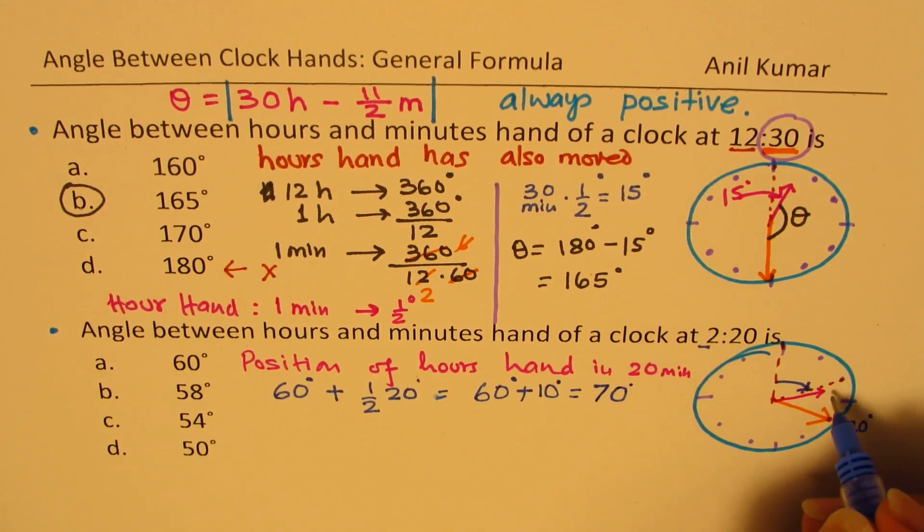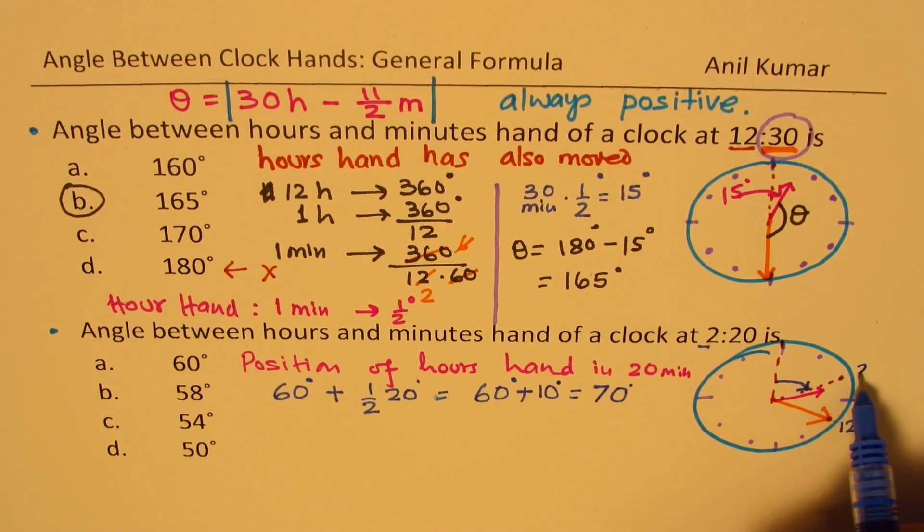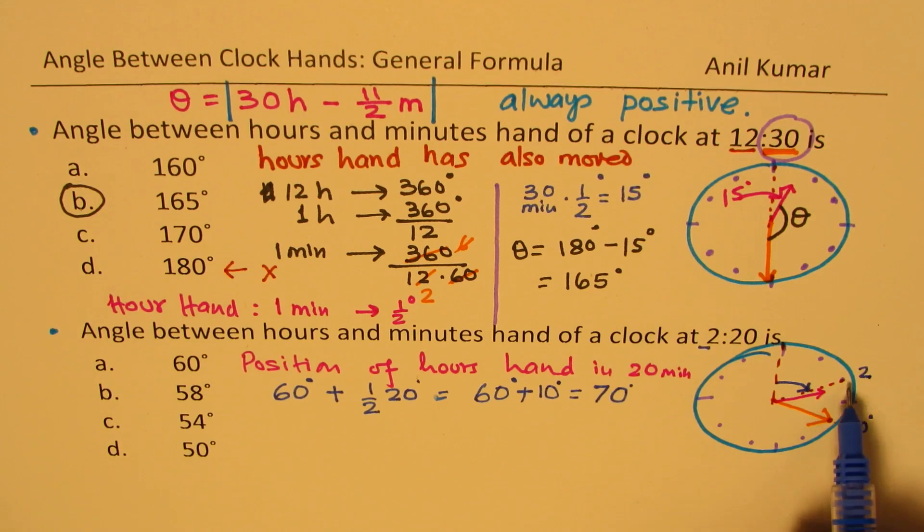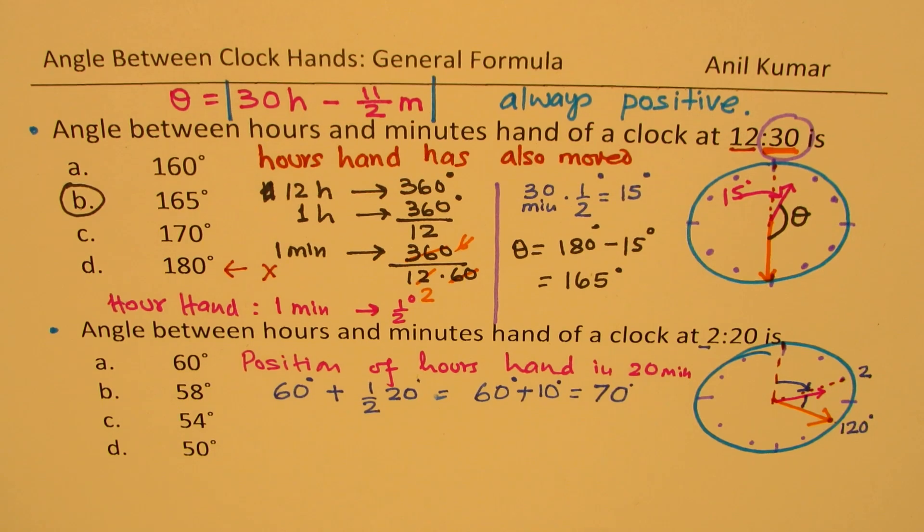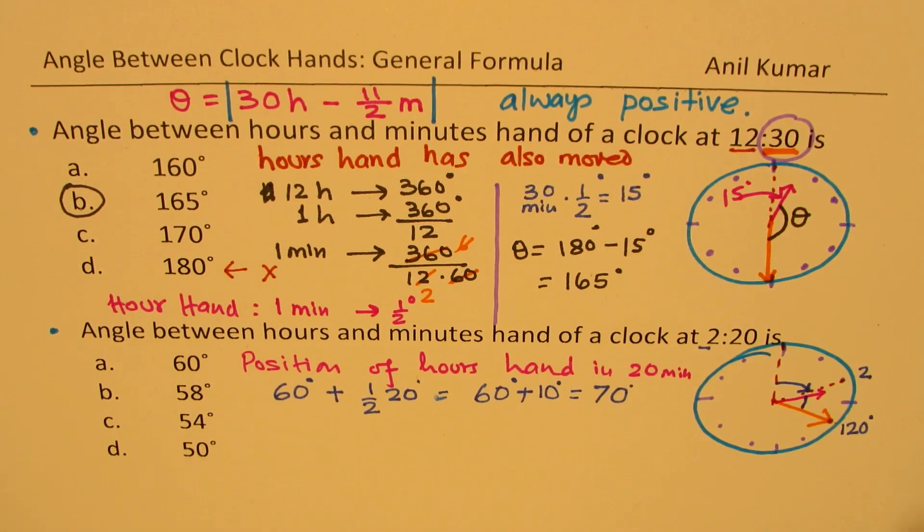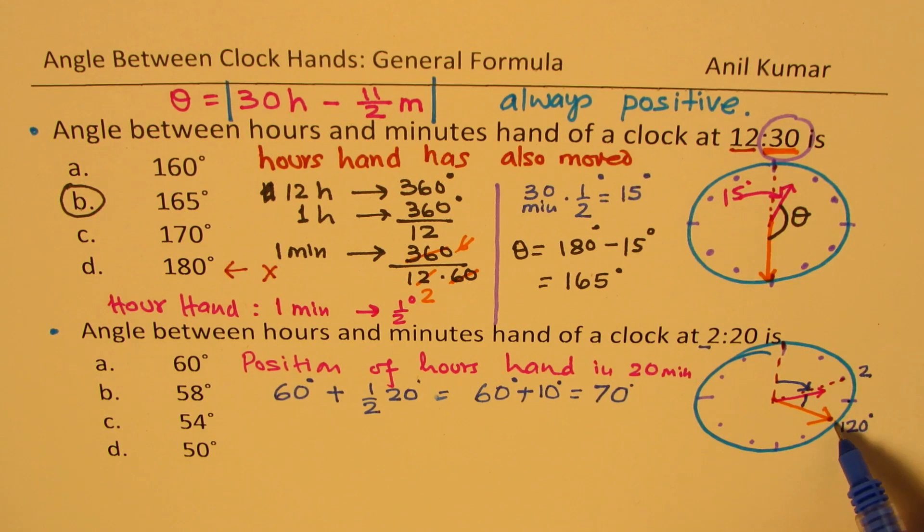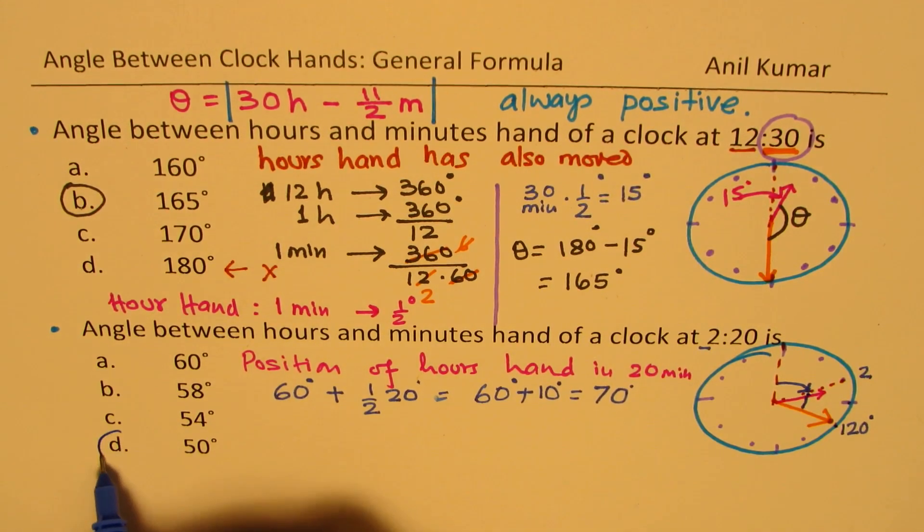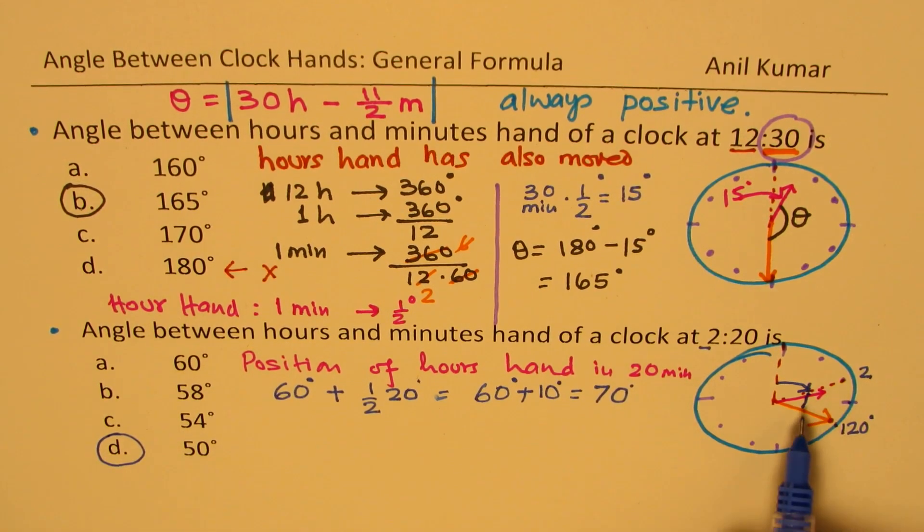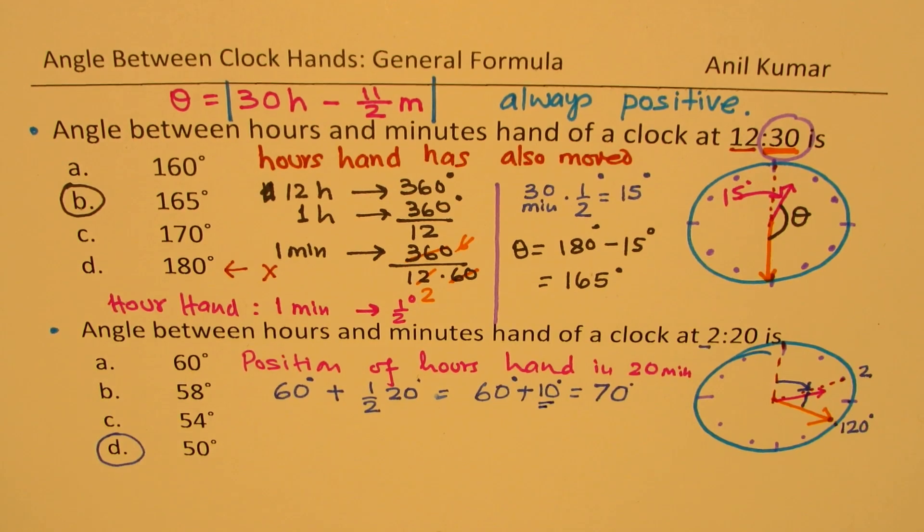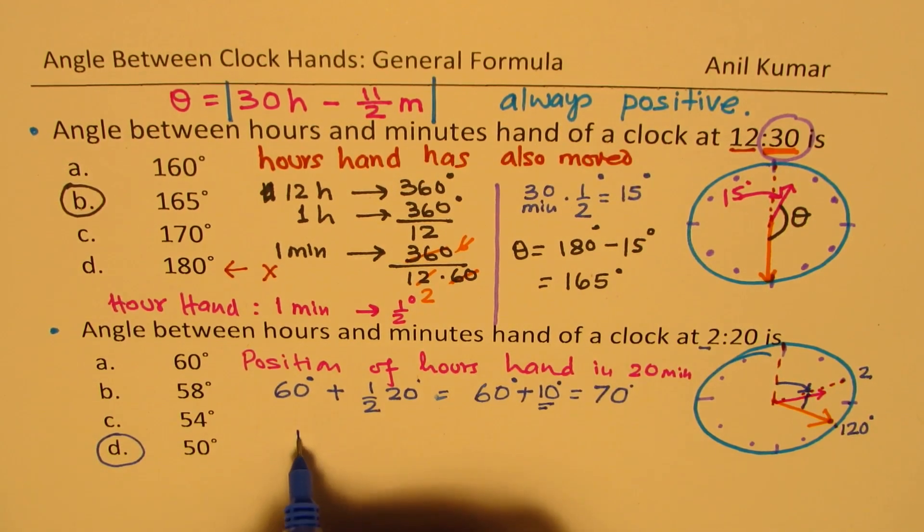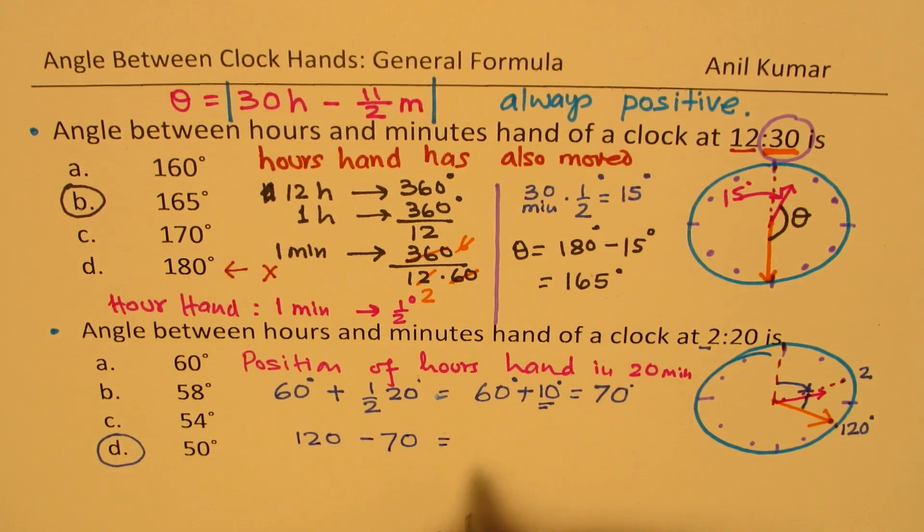So you can do like this also. So basically, by the time the minutes arm approached this place, from 2, let's say start from 2, the hour's hand moved 10 degrees. And therefore, it reduced the distance between them, the angle between them by 10 more degrees. Do you get the idea? So either way you could calculate.